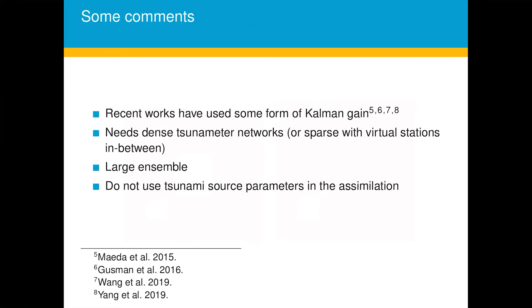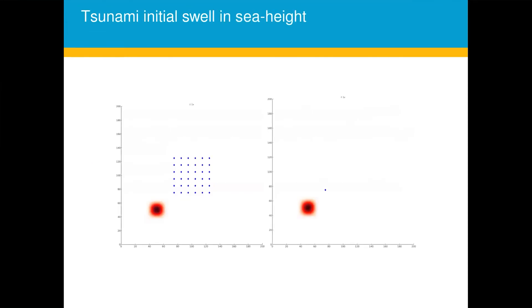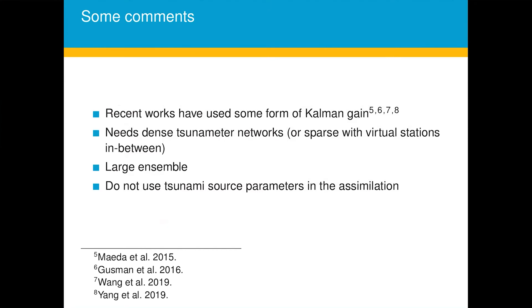So recent works have all used some kind of Kalman gain to update the observations. And the problem, I wouldn't say it's a problem, it works well, but they need a lot of sensor locations and lot of data. So you saw the sensor locations which is quite dense. For a realistic case it won't be so dense but it is still dense enough so that the filter gets enough data to assimilate. Large ensemble sizes in terms of hundred, and none of these use tsunami source parameters in the assimilation. So in the initial discussions in the group we were trying to do the assimilation without the source parameters.